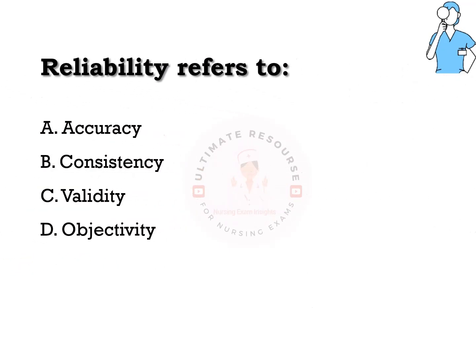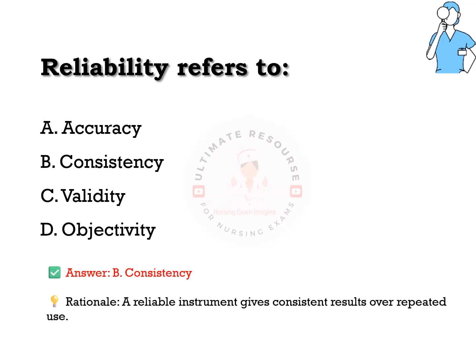Reliability refers to: options are a) accuracy, b) consistency, c) validity, d) objectivity. The answer is b) consistency. A reliable instrument gives consistent results over repeated use.